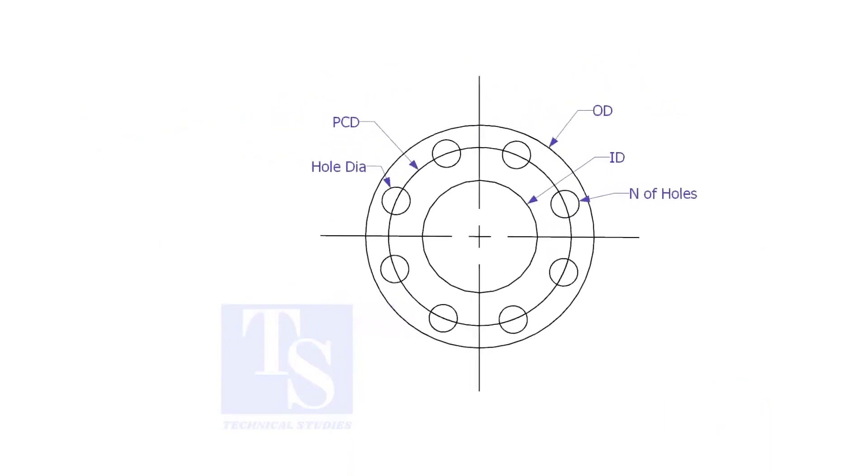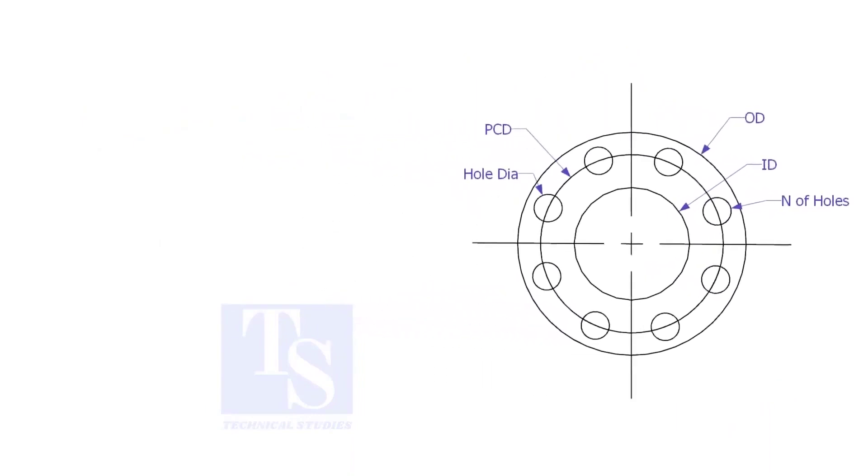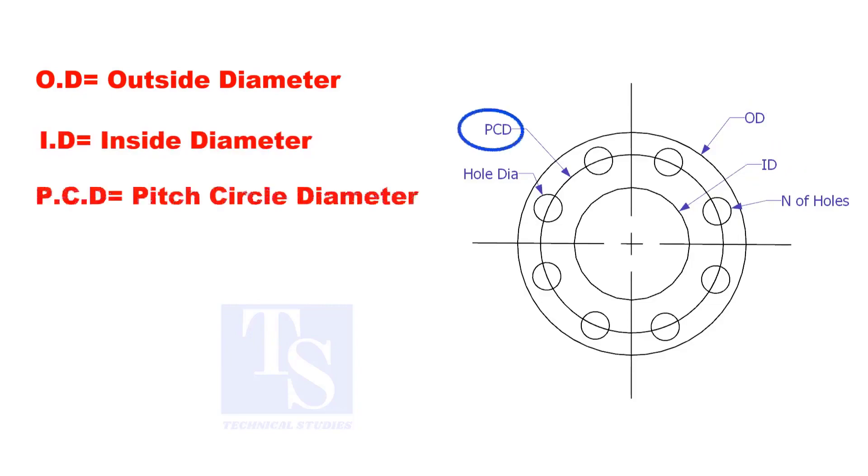To make a plate flange, we need to know the following things: OD, the outside diameter; ID, the inside diameter; PCD, the pitch circle diameter; number of holes; and the hole size.